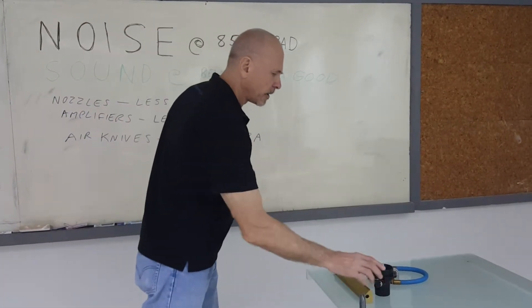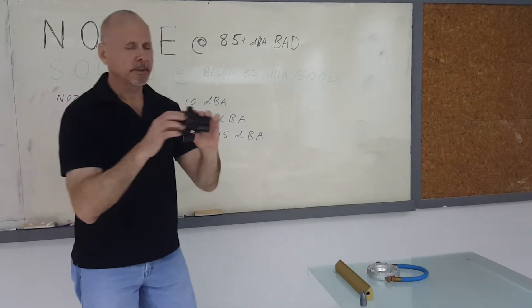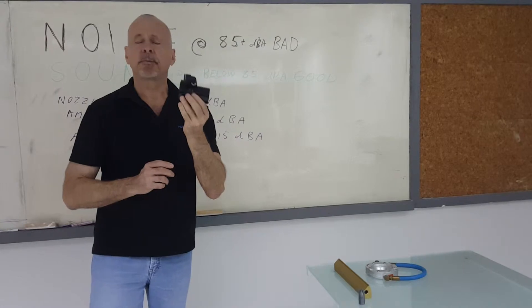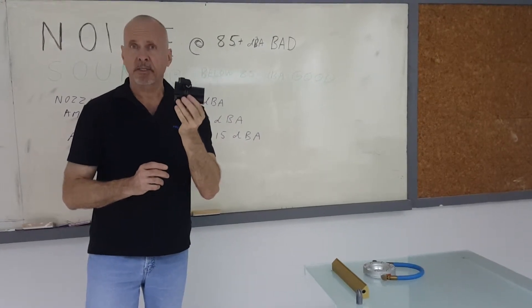If you make an air amplifier larger, it gets more efficient. An air amplifier this size, for example, often used for cooling applications, can reduce noise 10 to 12 decibels.